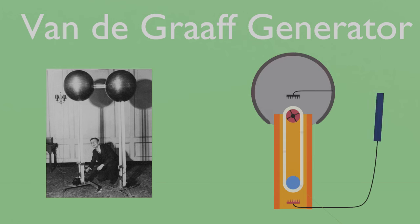In 1929, American physicist Robert van der Graaf developed the van der Graaf generator, an electrostatic generator capable of producing as much as 5 million volts of potential difference.